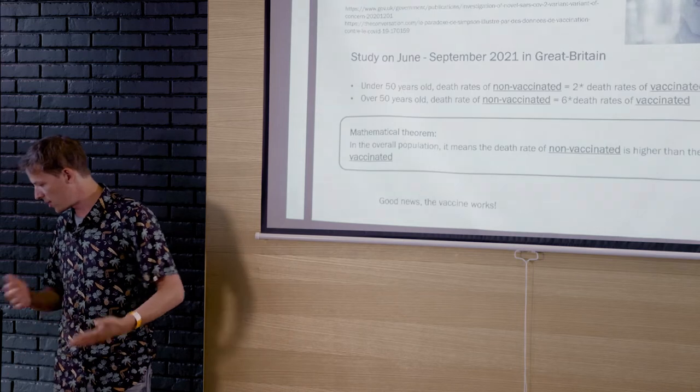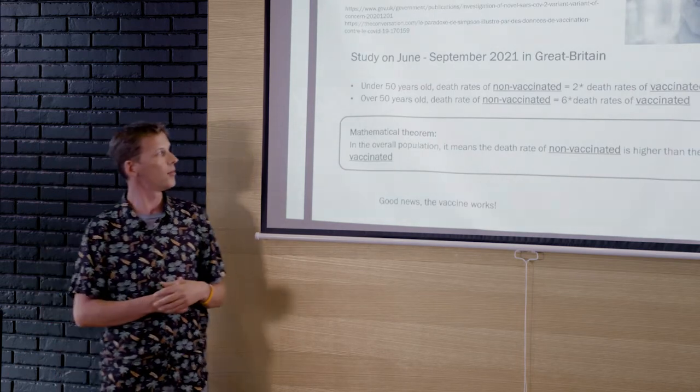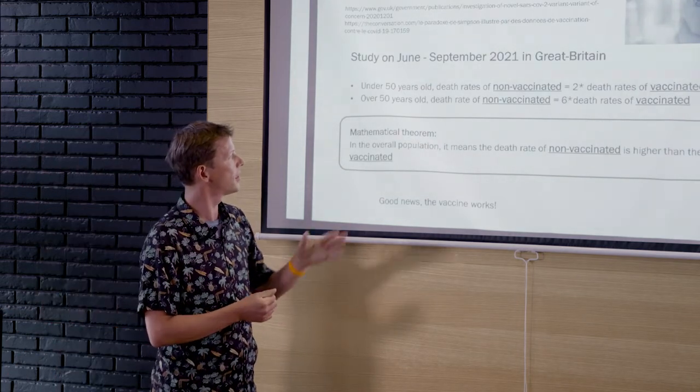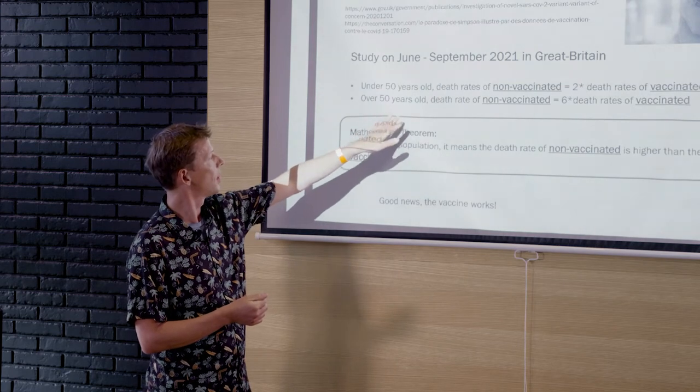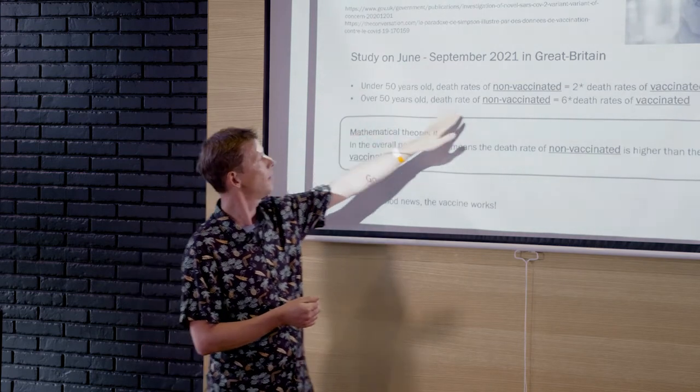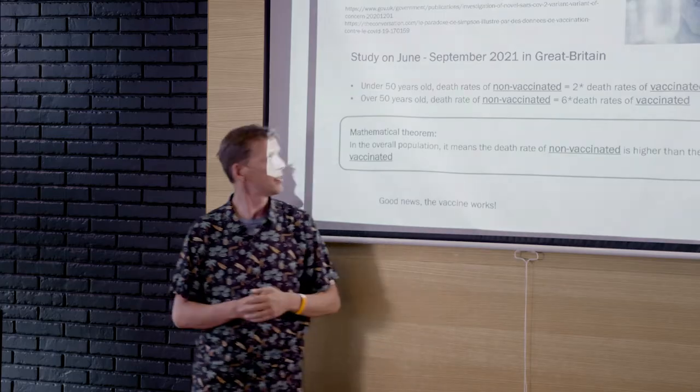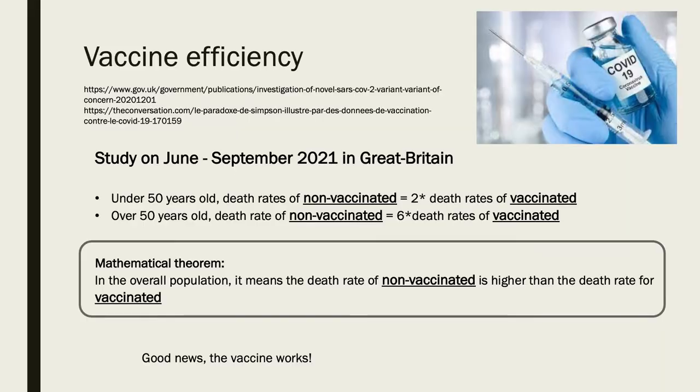So let's try to make some logic here. So this is the actual numbers. At this time of the study, so for young people, when you're non-vaccinated, you have twice as many times to die from COVID than when you are vaccinated. And for the older people, it's six times more. So okay, let's say you can have a mathematical theorem here, a logical conclusion here, which is that in the overall population, it means that vaccine is good for you.